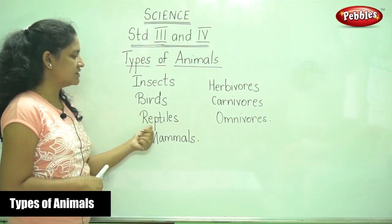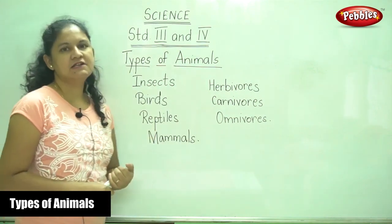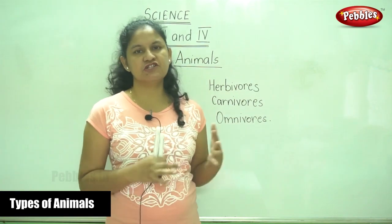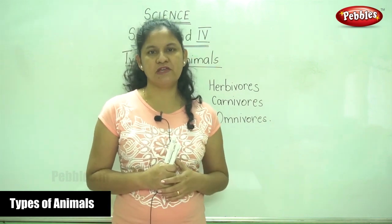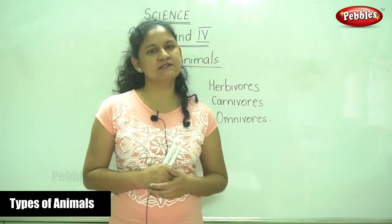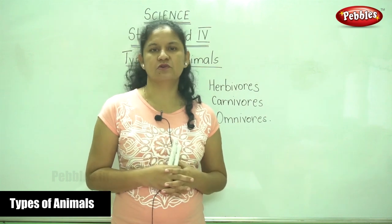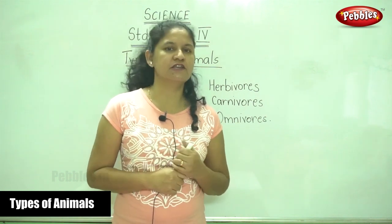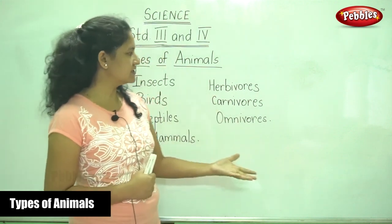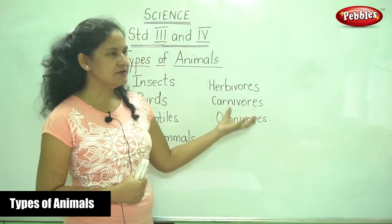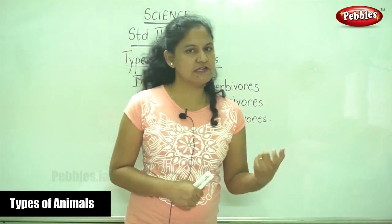There are different types of animals: insects, birds, reptiles, and mammals. Birds can be differentiated according to the type of beak and their claws. Birds also help plants and humans as well. Next, animals can be classified according to the type of food they intake.